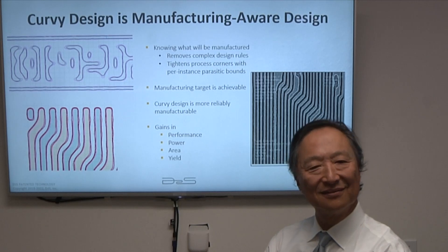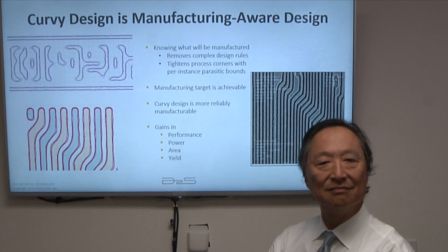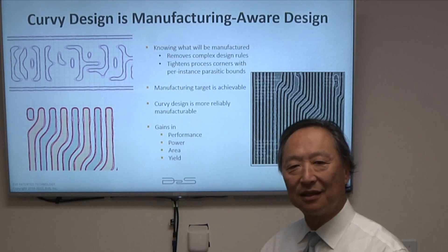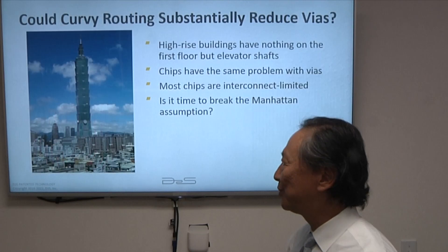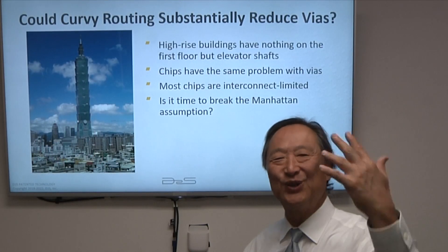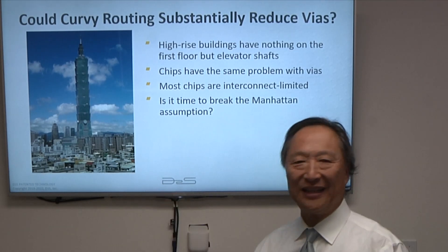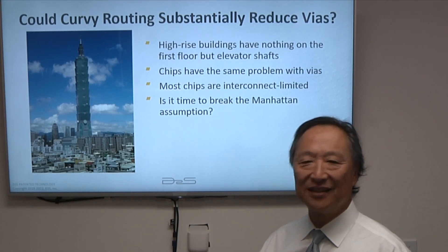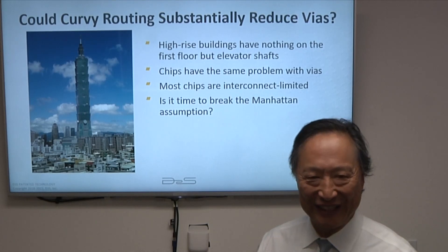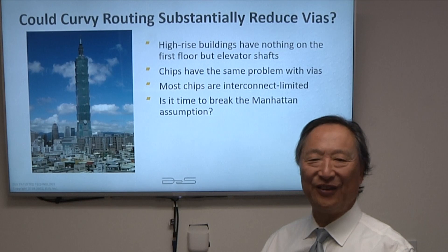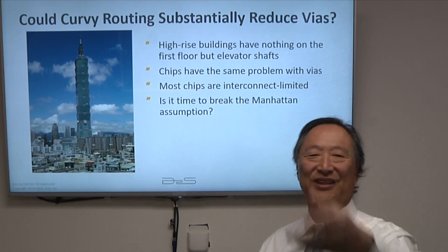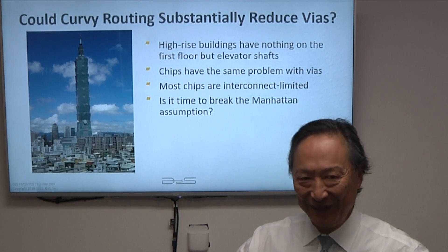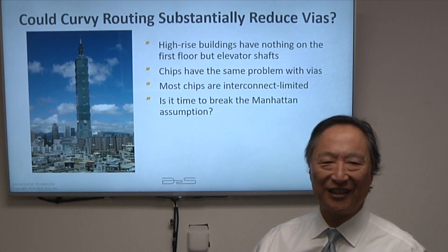What's also changed is the number of metal layers and different types of things going into a package — we're starting to go vertical with almost everything. Vias are really an important point. Intuitively, think of Taipei 101 or any skyscraper: you go into the first floor and you see nothing but security and elevator shafts. There isn't even enough place for stores, because you have to have elevators going from zero to 25, 25 to 50, 50 to 75, and so on. When you stack them all up, on the first floor you have to be able to get to all of them — so the first floor is just full of elevator shafts.